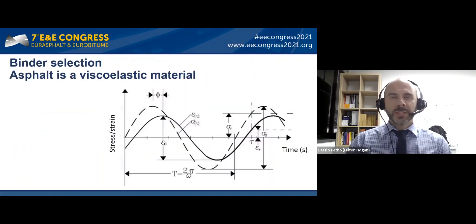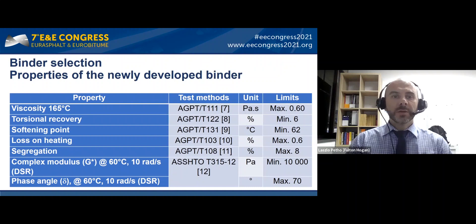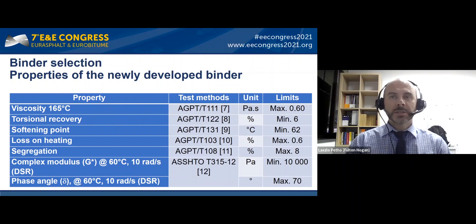For such an asphalt mix we needed a specific binder. Based on the viscoelastic nature of bitumen, we developed a binder with a fairly high complex modulus and a fairly low phase angle. As you can see, this is a modified binder. We added conventional test results to this table so you can benchmark this binder against your local high-performing binders.